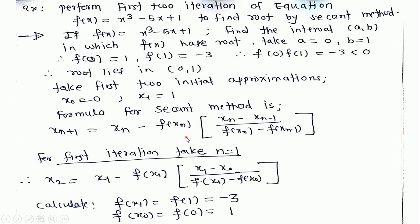Now I will explain how to solve a problem using the secant method. Here is the function f of x equals x cubed minus 5x plus 1. We are interested in finding some iterations by the secant method. We first find the interval in which the root lies — if you don't know how, see the video related to the intermediate value theorem. Here we get the interval 0 comma 1. We take the first two initial approximations x0 equal to 0 and x1 equal to 1.